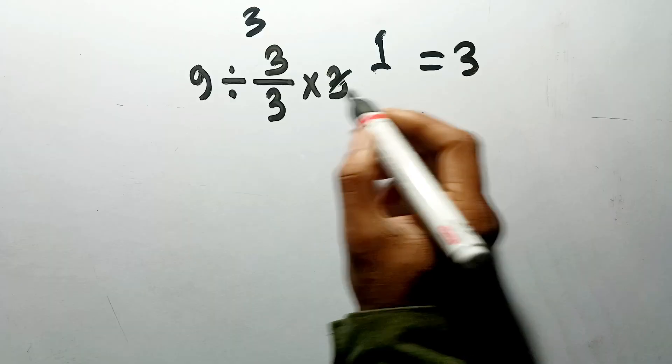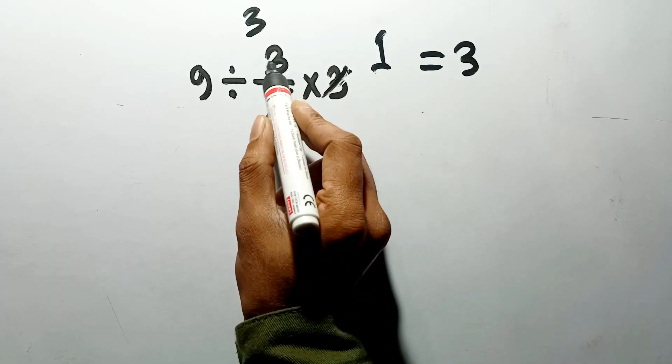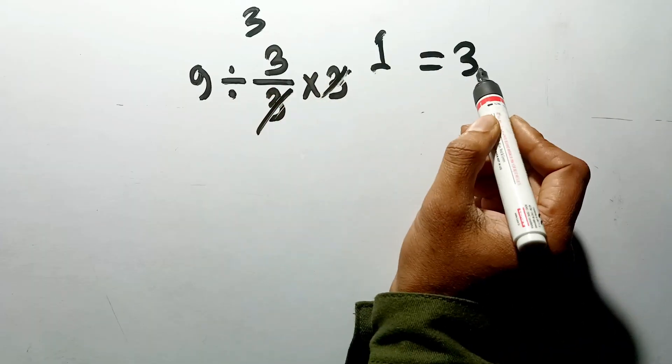Or maybe you just see the 3s and you think, hey, these cancel out, leaving just the 9 divided by 3, which also gives us 3.